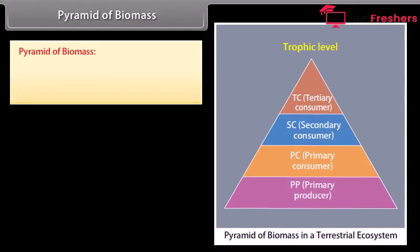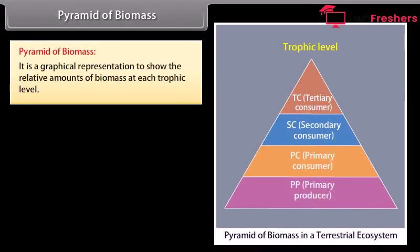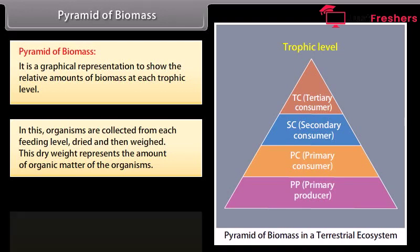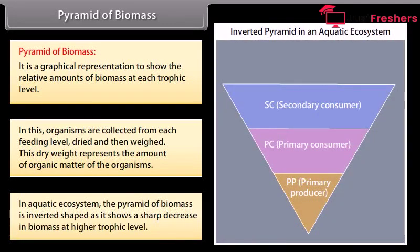Pyramid of biomass: it is a graphical representation showing the relative amounts of biomass at each trophic level. Organisms are collected from each feeding level, dried, and then weighed. This dry weight represents the amount of organic matter of the organisms. In an aquatic ecosystem, the pyramid of biomass is inverted in shape, as it shows a sharp decrease in biomass at higher trophic levels.